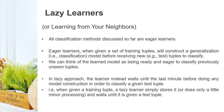Next is Lazy Learners, also known as learning from your neighbors. All classification methods discussed so far are Eager Learners. Eager Learners, when given a set of training tuples, will construct a generalization — that is, a classification model — before receiving new or test tuples to classify. We will generate the classification model based on training tuples before we receive new tuples to classify. The learned model can be thought of as being ready and eager to classify previously unseen tuples.